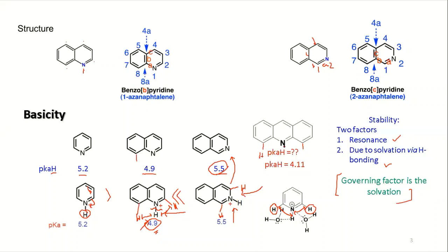For isoquinoline, you have the pyridine-like environment: the two hydrogens at the ortho positions are not parallel to the hydrogen attached to nitrogen, so you have proper solvation from both sides. The protonated form of isoquinoline is stabilized more due to solvation, and you have more resonating structures. Combining these two factors, the protonated form of isoquinoline is much more stable, so its acidic property is less, meaning the parent compound is more basic, and pKa is higher.